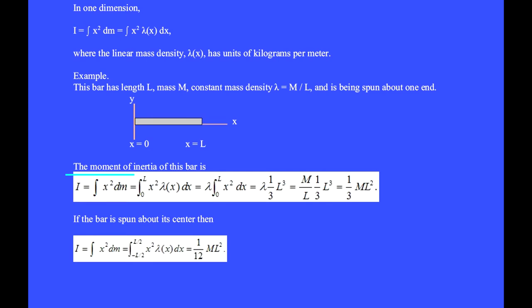The moment of inertia of this bar is I equals the integral of x squared dm, or replacing dm with lambda dx, we integrate x squared lambda from 0 to l. Lambda is a constant and comes out of the integral sign. Integrating x squared from 0 to l, we get lambda times l cubed over 3. But lambda is m over l, so we get one third ml squared as the moment of inertia of a bar being spun about its end.